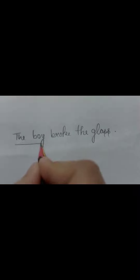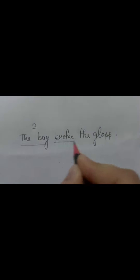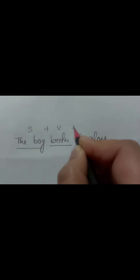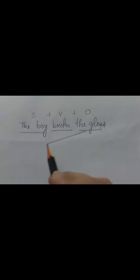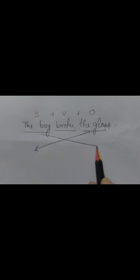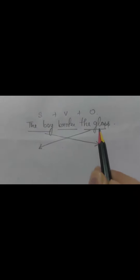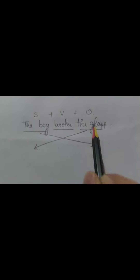Let's take an example to understand in a better way. Suppose I take the example: 'The boy broke the glass.' Let me tell you the structure of the sentence: Subject plus Verb plus Object. This is the structure of the sentence. But when we are going to change it into passive voice, we are just exchanging the position of object with subject and subject with object.